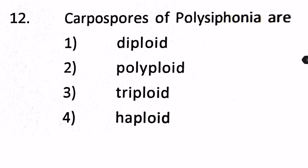Carpospores of Polysiphonia are which ploidy level? Options are diploid, polyploid, triploid, or haploid. Carpospores of Polysiphonia are diploid. It's a fact. The answer is number 1.